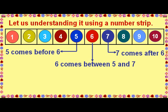Let us understand it using a number strip. 5 comes before 6. 7 comes after 6. 6 comes between 5 and 7.